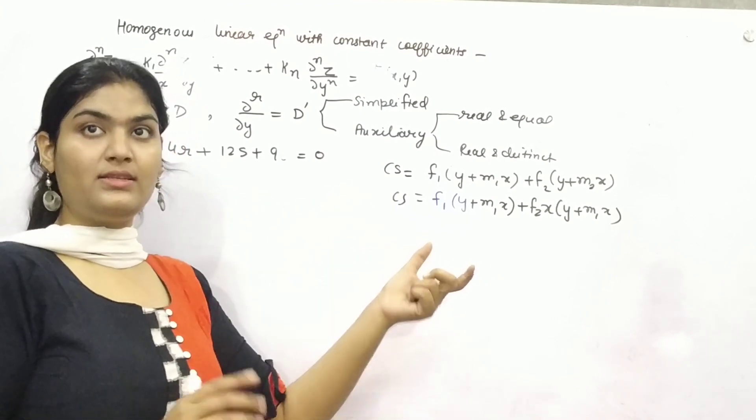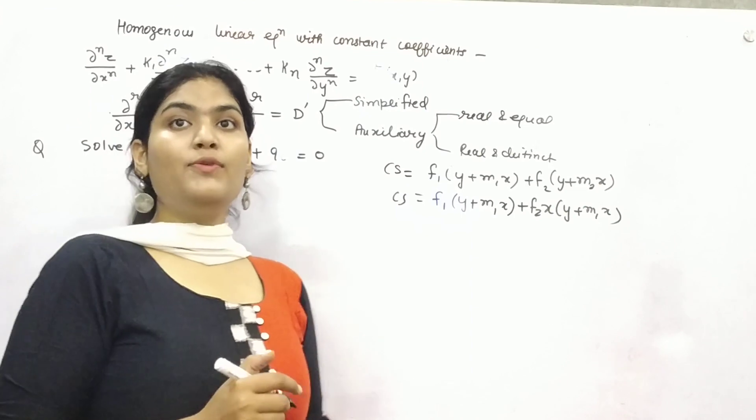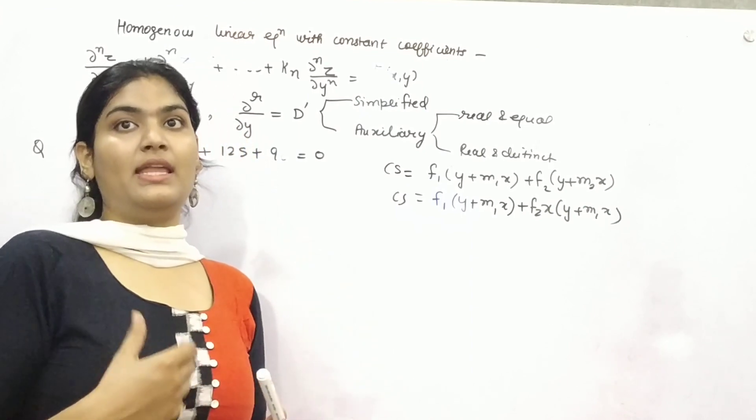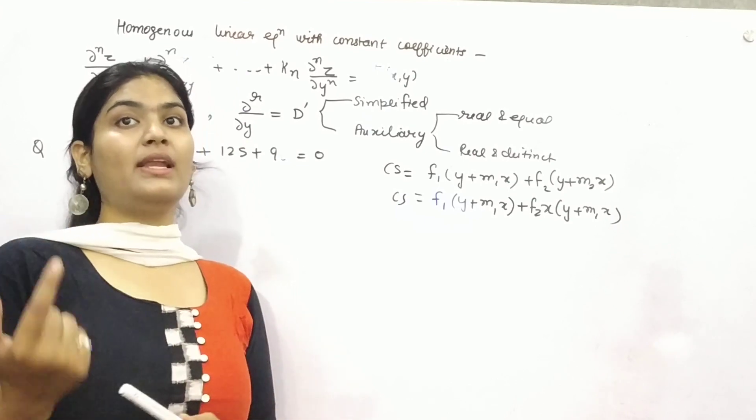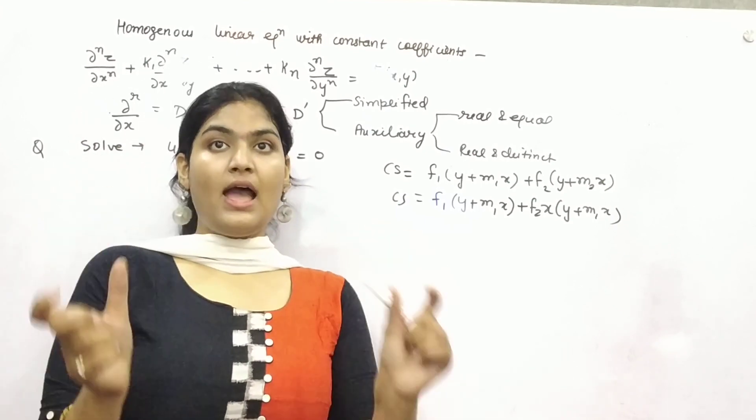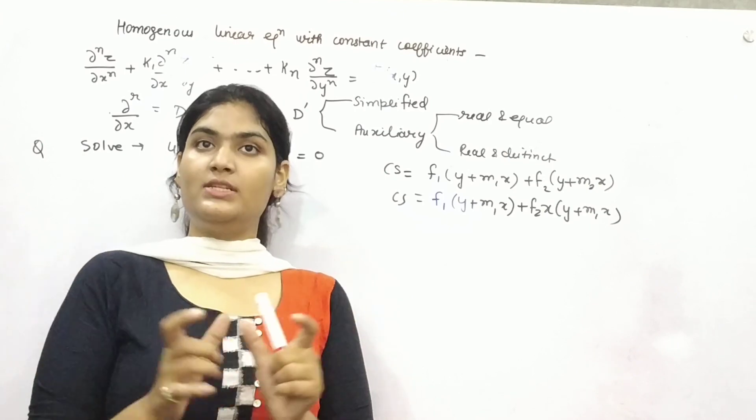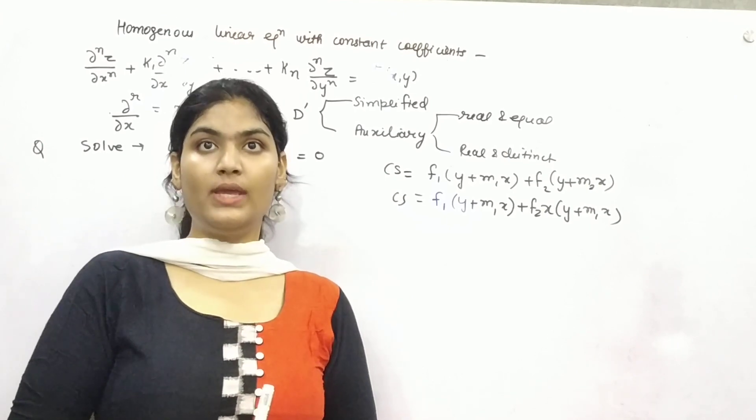For equations whose right hand side is not 0, if you are given something like e raised to power x, trigonometric function, or power function, then you need to find out particular integral. Add complementary factor and particular integral, then you will get complete solution.